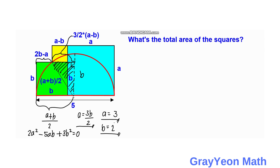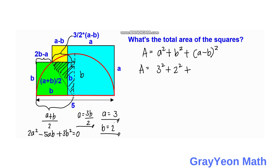For the final step, we find the total area of the three squares. Area = a² + b² + (a minus b)². Substituting: 3² + 2² + (3 minus 2)² = 9 + 4 + 1 = 14. The total area is 14 square units.